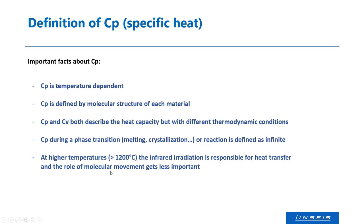At higher temperatures — around 1200°C and above — infrared irradiation is mainly responsible for heat transfer. Up to that temperature, vibration is transferred between neighboring molecules. Beyond about 1200°C, the contact between molecules becomes less important, and infrared and electronic irradiation dominate the heat transfer, making it very hard to determine CP above that threshold.